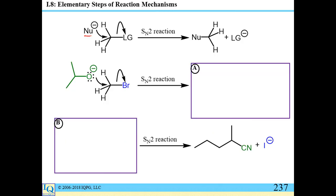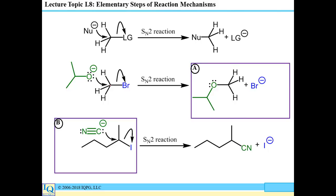The SN2 reaction requires a good nucleophile and a good leaving group. If the nucleophile attacks the same carbon that has a leaving group, there is concerted formation of a new sigma bond with simultaneous breakage of the old sigma bond — that's how it differs from coordination or heterolysis. For example, isopropoxide attacking bromomethane gives the SN2 product, or cyanide attacking a secondary carbon of iodopentane gives cyanopentane with iodide as the leaving group.